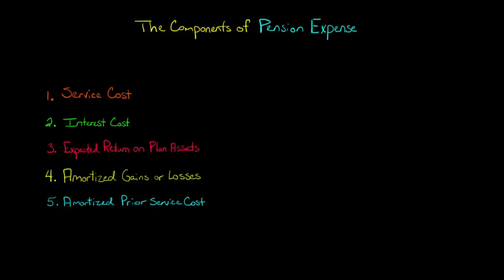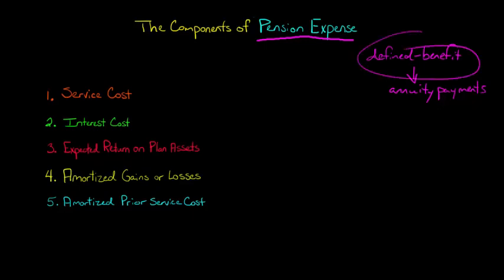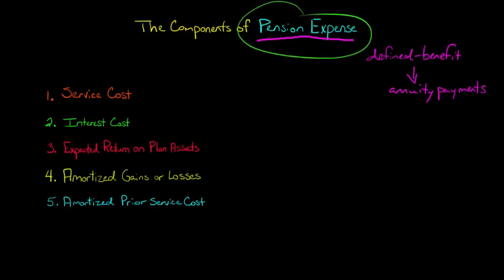In this video, we're going to talk about the five different components of pension expense when we're talking about a defined benefit pension plan. A defined benefit pension plan is the type that gives a series of annuity payments to employees after they retire. This isn't a 401(k) — this is a defined benefit plan. So there are five different components that go into calculating pension expense.